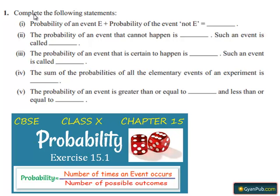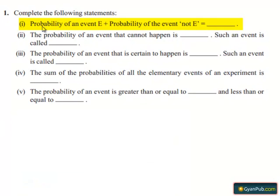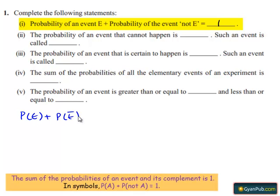Coming to the first question, complete the following statements. In the first bit, probability of an event E plus probability of the event not E equals 1. That is, P(E) + P(E bar) = 1, where E bar stands for not E. E and E bar are complementary events.